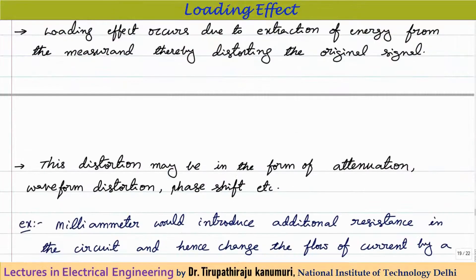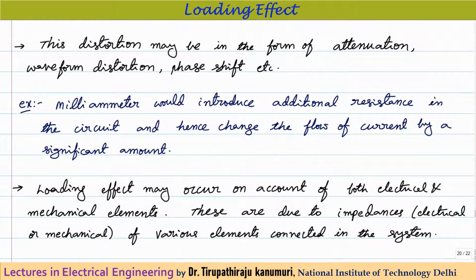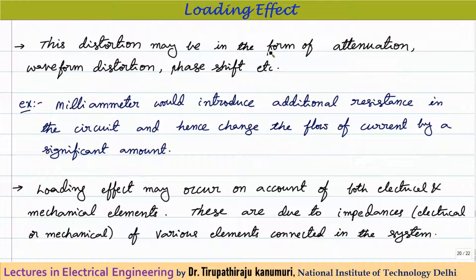This distortion can be in the form of attenuation — meaning distortion in the magnitude of the signal — or the waveform shape itself can be distorted, or there can be a phase shift. We are going to discuss all these effects one by one in detail with derivation.